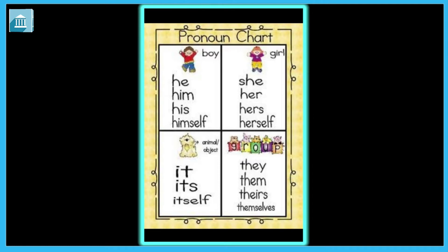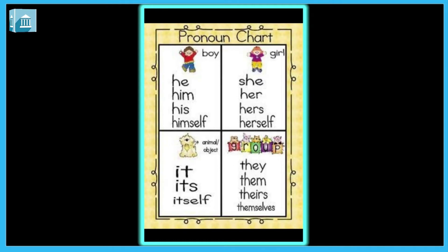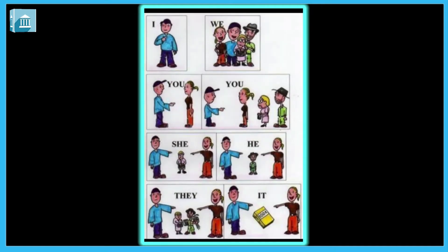See one more picture — the Pronoun Chart. For one boy, singular noun, we use: he, him, his, himself. For a girl, singular noun, we use: she, her, hers, herself. For an animal, one object, or non-living thing, we use: it, its, itself. For a group or more than one noun, we use: they, them, and themselves.